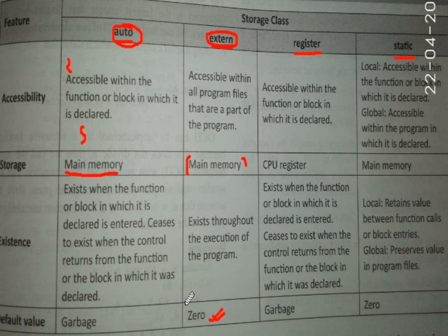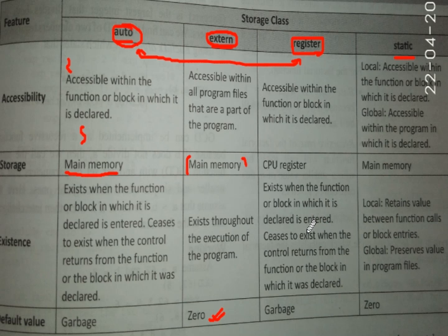If we do not initialize an external variable, it will take the value 0 by default. The third storage class is register. Register variables are accessible within the function or block in which they are declared, just like auto. The only difference is that register variables are stored in the CPU register rather than main memory, so execution of a register variable is faster than an auto variable. Its existence is the same as auto, and its default value is garbage.